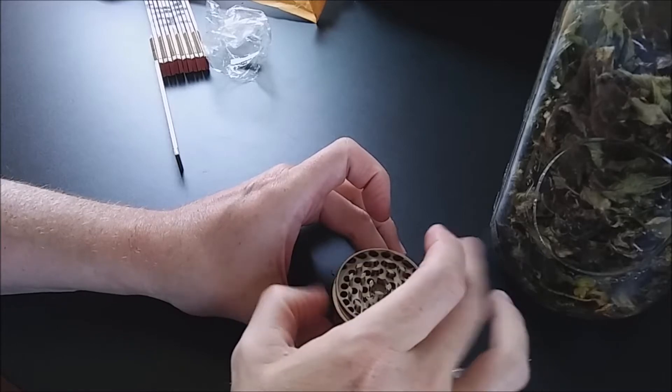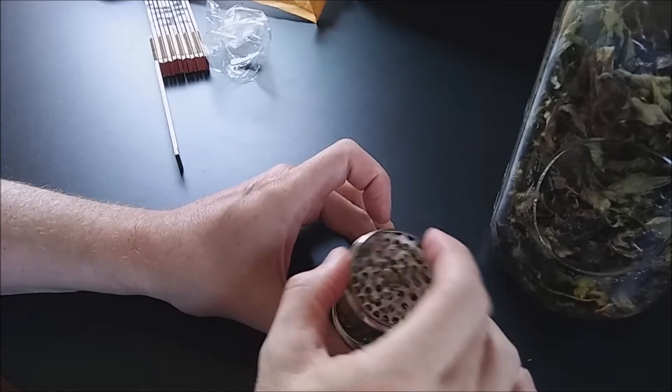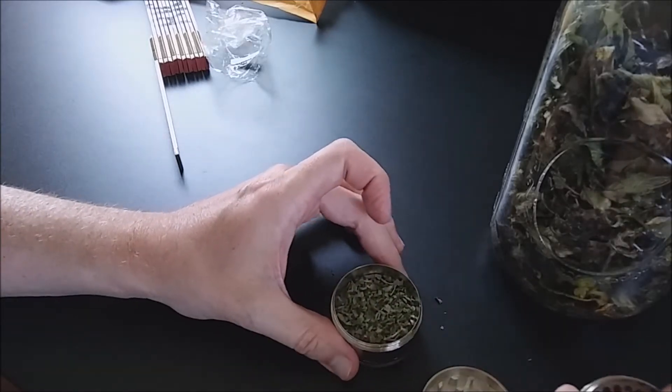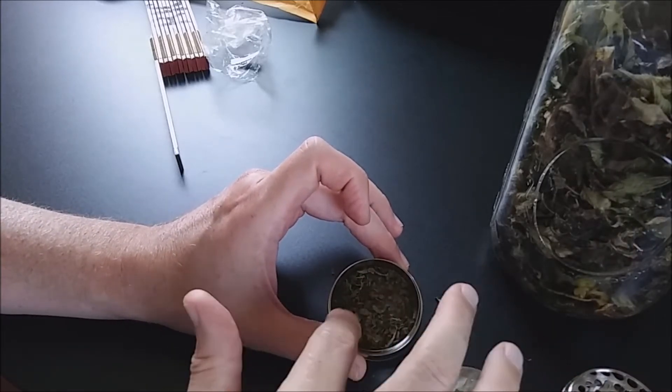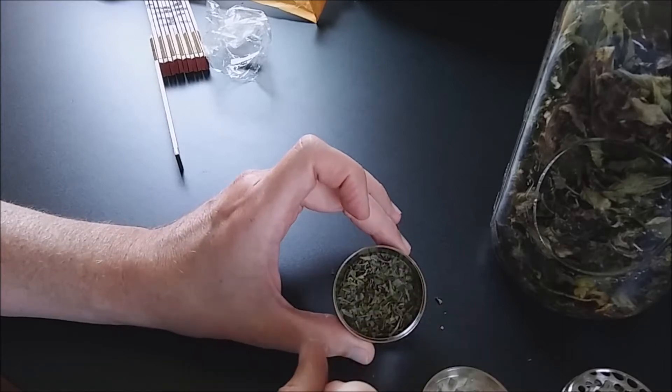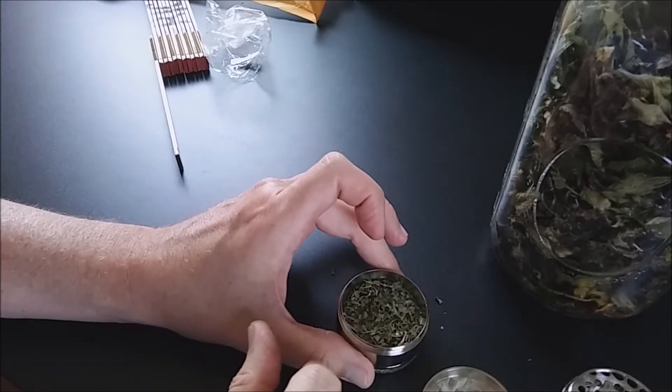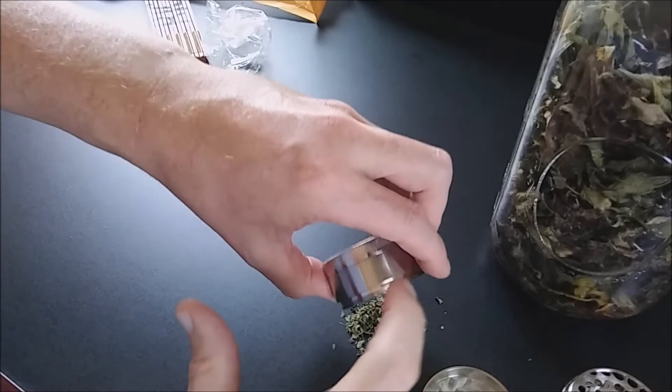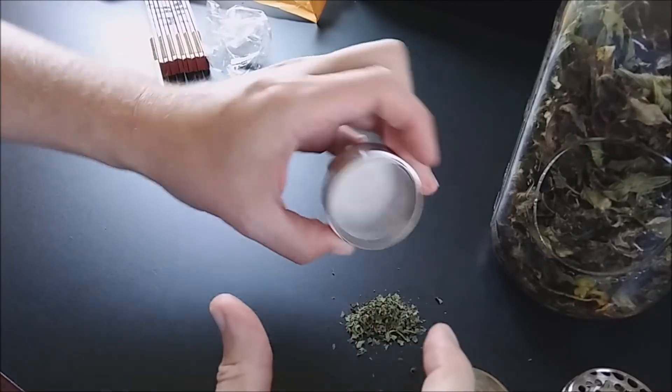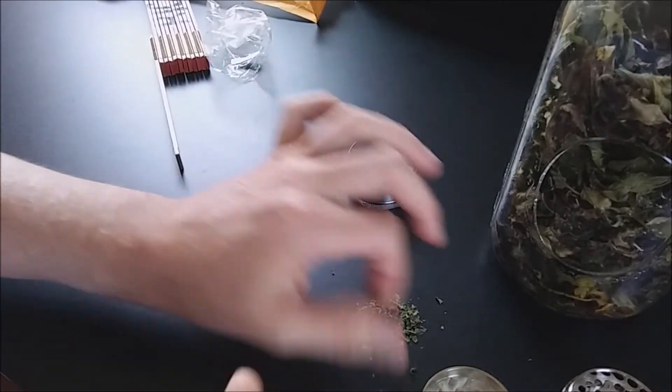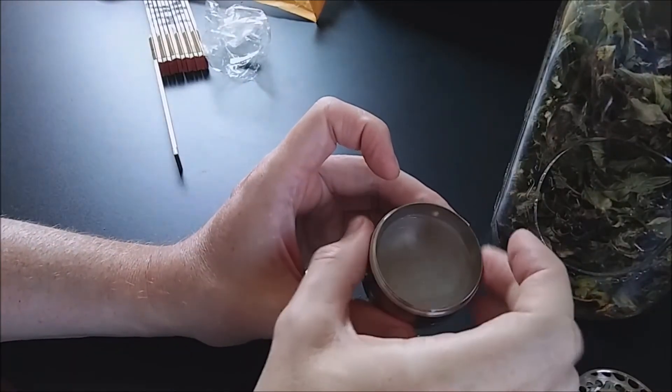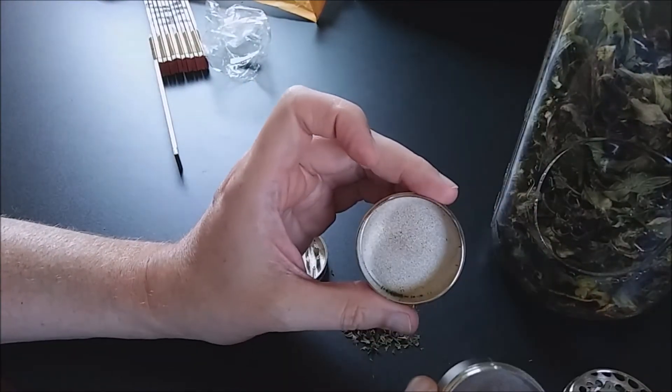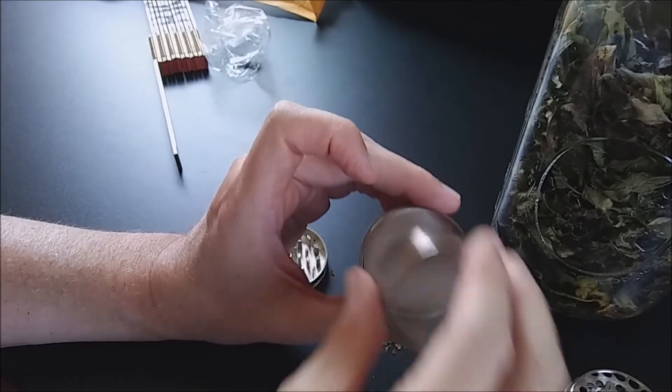And there it is - nice smooth consistency. It had some stems in there from the mint and it ground them up real nice. I'll pour it down so you can take a look at it - almost like regular tea. We'll go ahead and remove the lower portion and you can see just some fine shavings that came through.